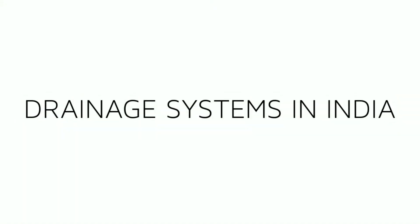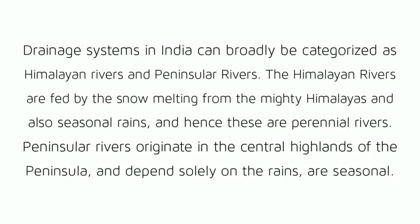Drainage systems in India can broadly be categorized as Himalayan rivers and peninsular rivers. The Himalayan rivers are fed by the snow melting from the mighty Himalayas and also seasonal rains, and hence these are perennial rivers. Peninsular rivers originate in the central highlands of the peninsula and depend solely on the rains, so they are seasonal.